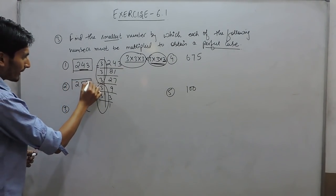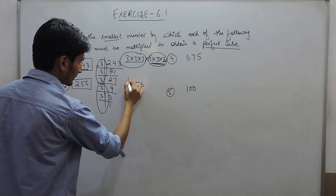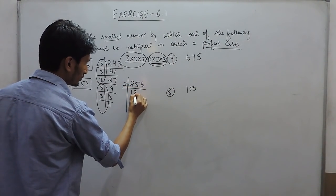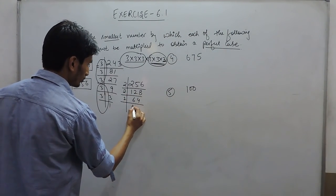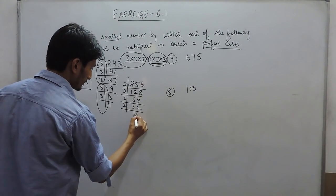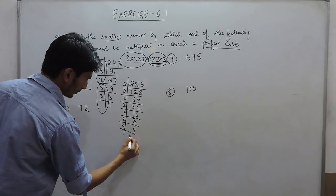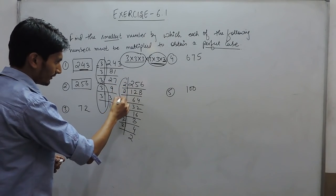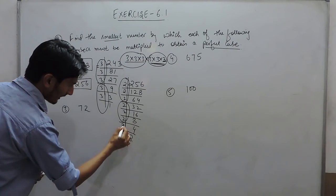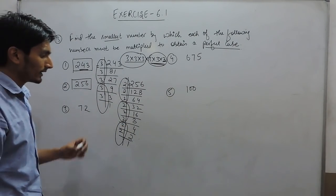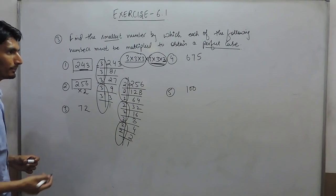Similarly, when we do the prime factorization of 256, dividing repeatedly by 2 we get: 256 ÷ 2 = 128, ÷ 2 = 64, ÷ 2 = 32, ÷ 2 = 16, ÷ 2 = 8, ÷ 2 = 4, ÷ 2 = 2, ÷ 2 = 1. In this case we have one group of 3 numbers, a second group of 3 numbers, and in the last group 2 numbers are missing to become a perfect cube. So in this case we have to multiply this with 2 to make it a perfect cube.